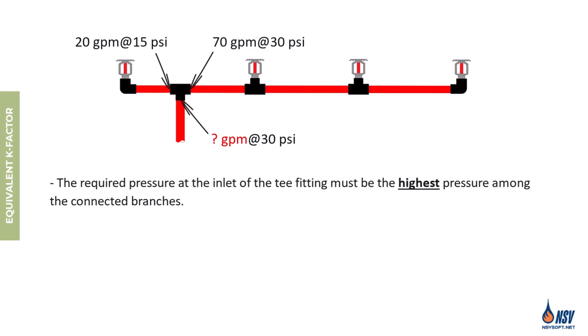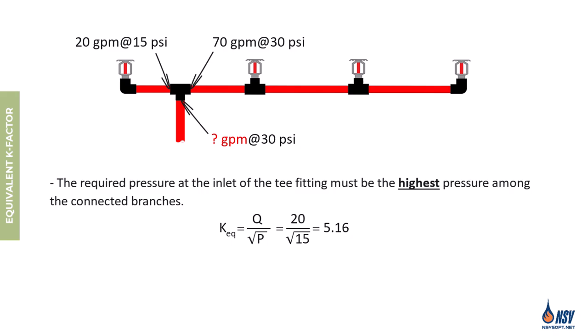By supplying 30 psi at the inlet of the tee, the three sprinklers on the right side will discharge the required 70 gpm. But the single sprinkler on the left only needs 20 gpm at 15 psi, yet we're supplying 30 psi at the inlet. This means the actual flow through that sprinkler will be higher than 20 gpm. To find the actual flow rate, we apply the concept of equivalent K factor. For the section on the left side of the tee — which includes a single sprinkler and its connecting pipe — the flow is 20 gpm and the pressure is 15 psi. Using the formula, we divide 20 by the square root of 15, which results in an equivalent K factor of approximately 5.16.